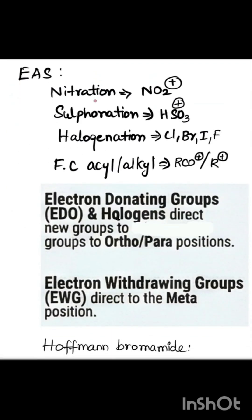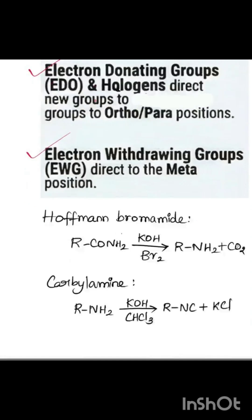The next category is electrophilic aromatic substitution. The key point to note is the nature of the new electrophiles. If electron-donating groups are already present in the benzene ring, they direct the incoming group to ortho and para positions. If electron-withdrawing groups like nitro or cyano are present, they direct the incoming group to meta positions.